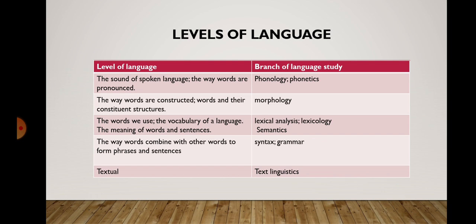Here is a list of the major levels of language and their related technical terms in language study, along with a brief description of what each level covers. If the level studies the sound of spoken language and the way words are pronounced, then we speak about phonology and phonetics. If the level describes the way words are constructed and their constituent structures, then it is morphology.